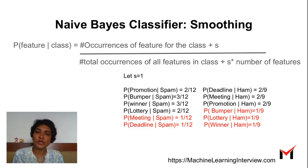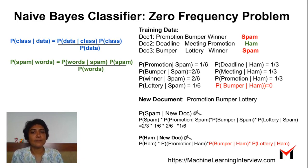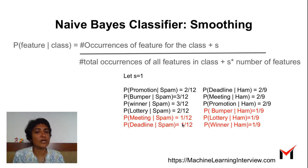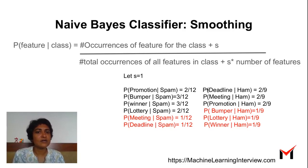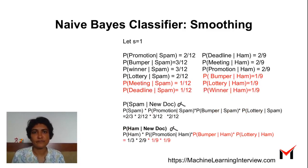With s equals one (Laplace smoothing), probability of 'promotion' given spam was earlier one-sixth. Now we add one to the numerator and six to the denominator (since there are six features), so it becomes two-twelfths. We add six to all denominators and one to all numerators. Now zero probabilities will no longer be zero — probability of 'meeting' given spam becomes one-twelfth instead of zero, even though 'meeting' is not in any spam training documents. Similarly for HAM documents. This is one way of smoothing; there are many others.